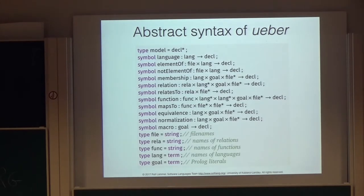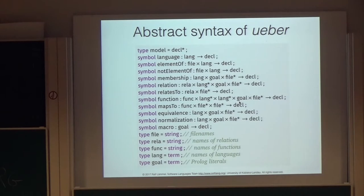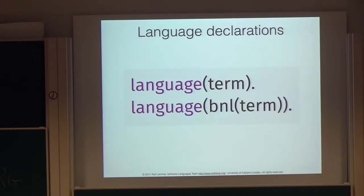This is the abstract syntax of the domain-specific language — it's a term-based representation. To be honest, there is no concrete syntax, so we actually use this abstract syntax directly. An Uber mega-model is a list of declarations. We can declare a language, say something is an element of something or not, set up a goal to plug in functionality, set up a membership test, set up a relation typed by languages, and plug in functionality for functions. That functionality might be a Java static method, a Prolog predicate, a Haskell main function, or a Python script.